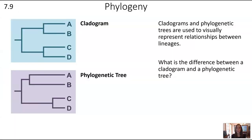Phylogeny is examining the relationship between lineages — for example, looking at the evolution of species within a related group of species. Cladograms and phylogenetic trees are two ways that we can visually represent those relationships.